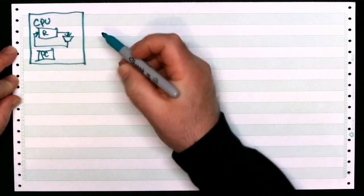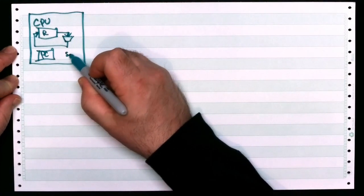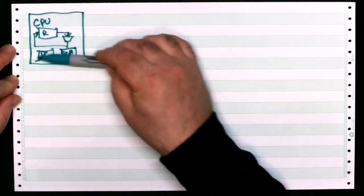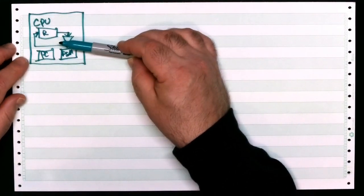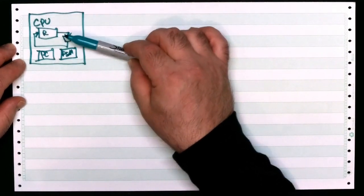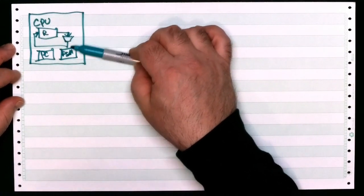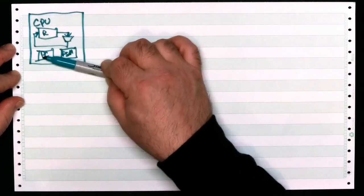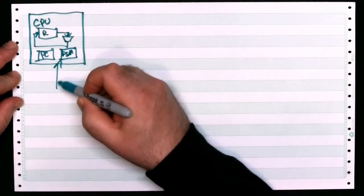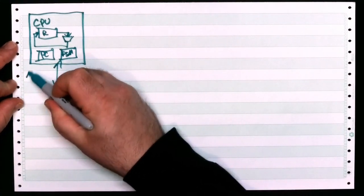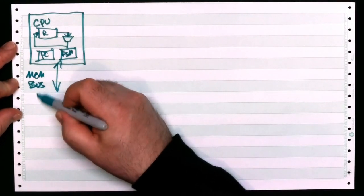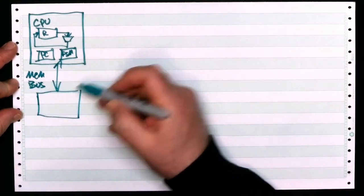You've got a program counter, and you've got some sort of finite state machine whose purpose is to orchestrate the operation of everything else. Over the course of time, this finite state machine says: this register goes here, a different register goes on the other input of the ALU, the output stores back over there, please advance the program counter, and so on. This finite state machine also controls the memory bus, and down here we have memory.